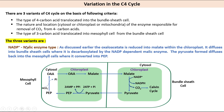The first variant is the NADP+ malic enzyme type. Here, oxaloacetate is reduced to malate within the chloroplast. It diffuses into bundle sheath cells where it is decarboxylated by the NADP-dependent malic enzyme. The pyruvate formed diffuses back into the mesophyll cells where it reacts with ATP to form PEP.